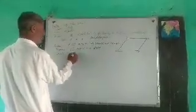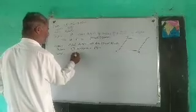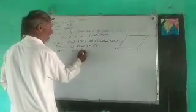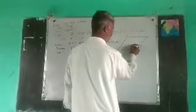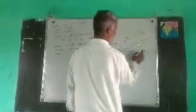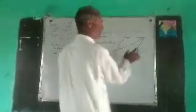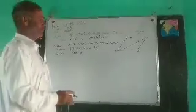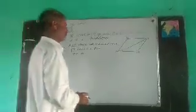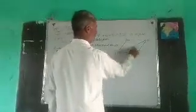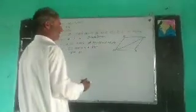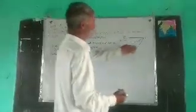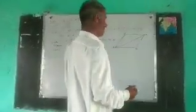Construction: join AC. This diagonal AC divides the quadrilateral into two triangles. There become two triangles, that is triangle ABC and triangle ACD.